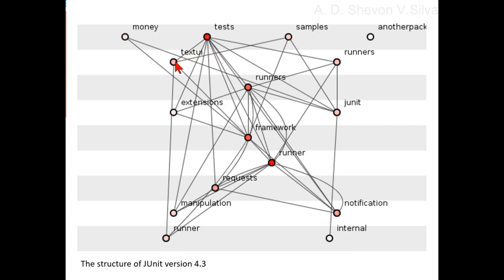Here, tests interacts with text UI, extensions, manipulation, requests, framework, runner, notification, runners, and JUnit. Here, samples interacts with text UI, framework, and JUnit. Text UI interacts with tests, runner, and framework. Here, runners interacts with runners, tests, extensions, manipulation, and framework. Here the extension interacts with JUnit.